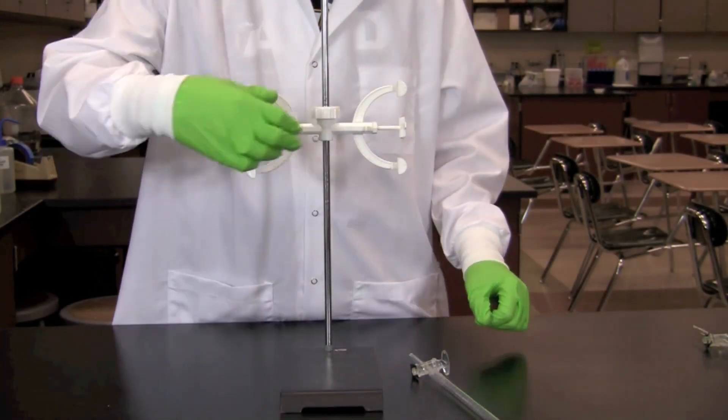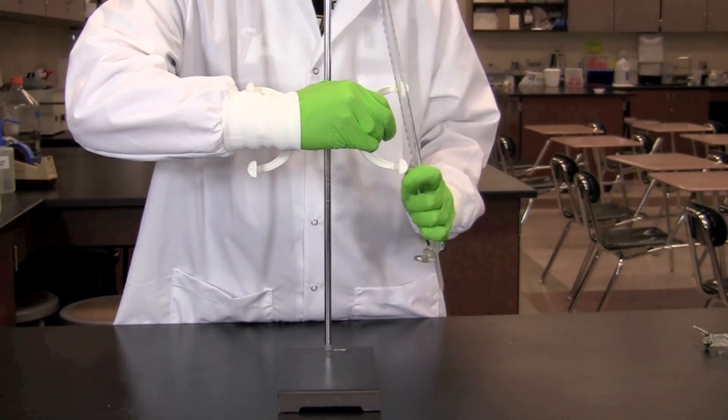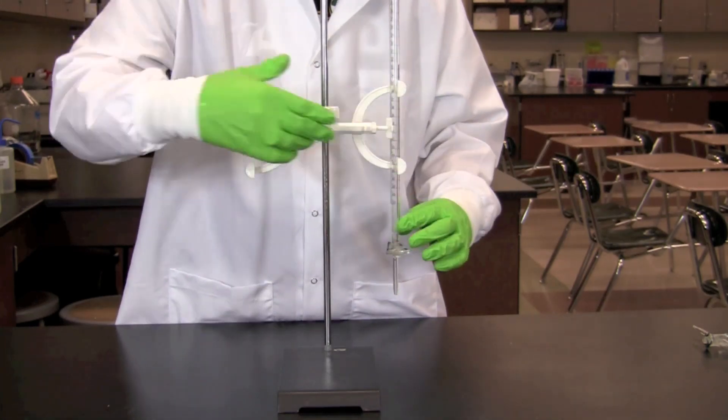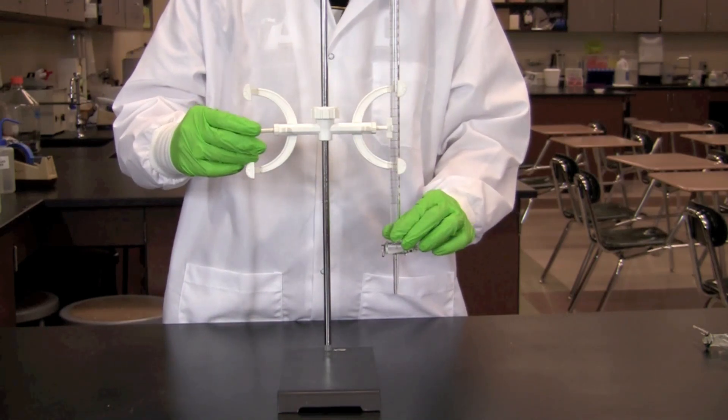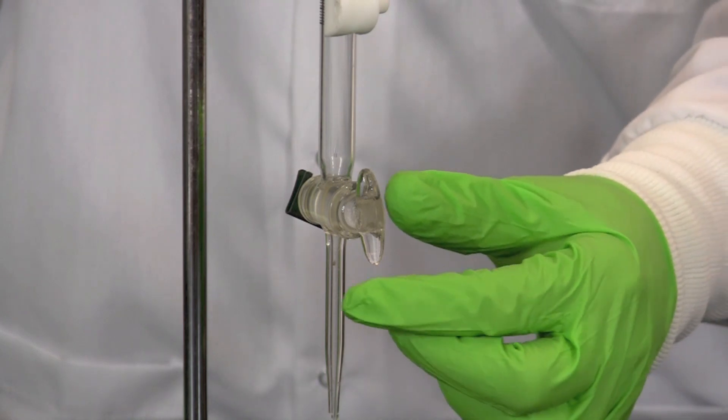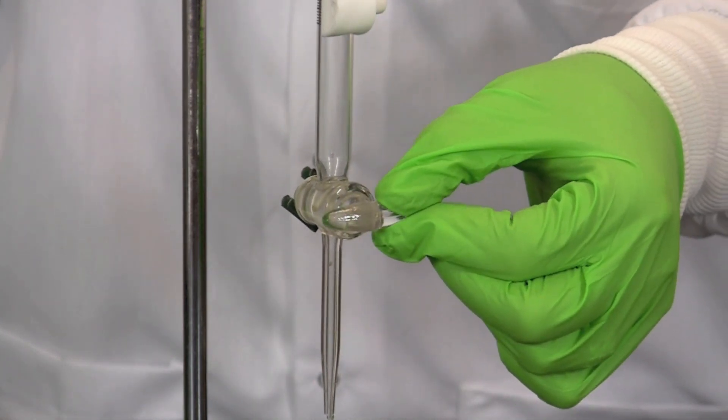First, set up the titration apparatus. Clamp the burette into a stand so that it is vertical with the stopcock at the bottom. Make certain the stopcock is in the closed position. It is closed when it is turned perpendicular to the burette.